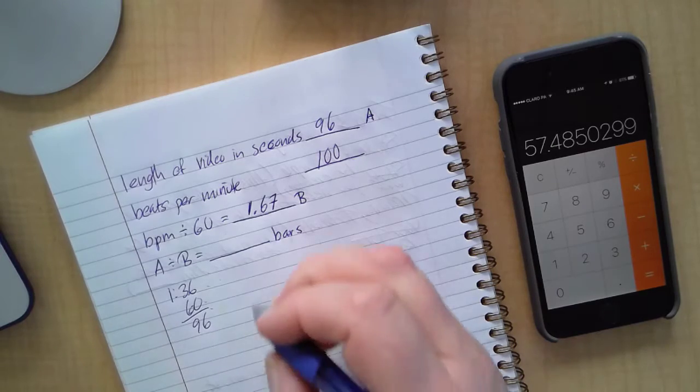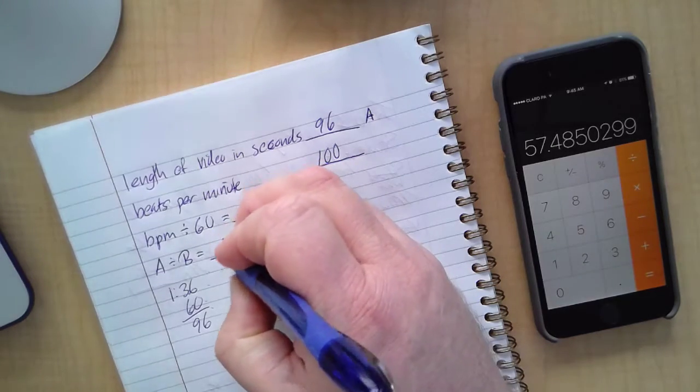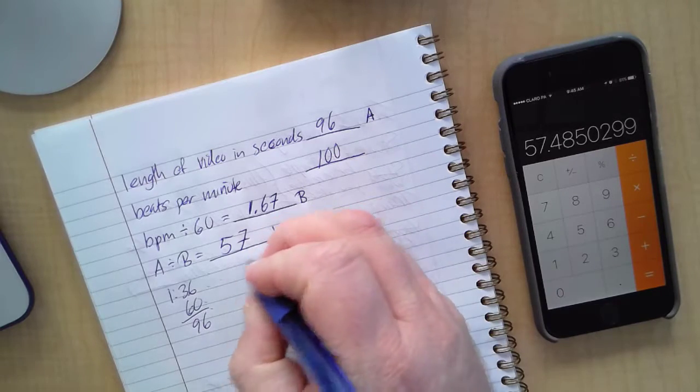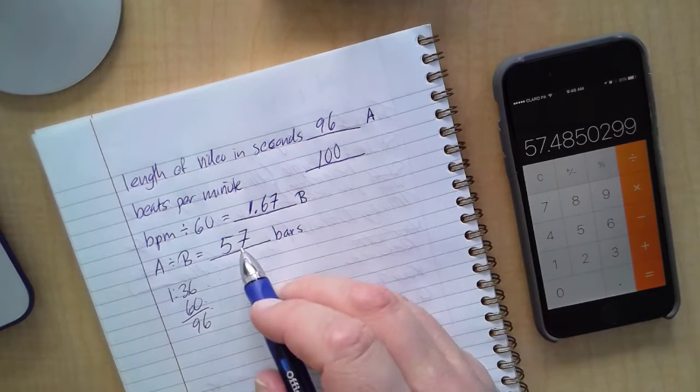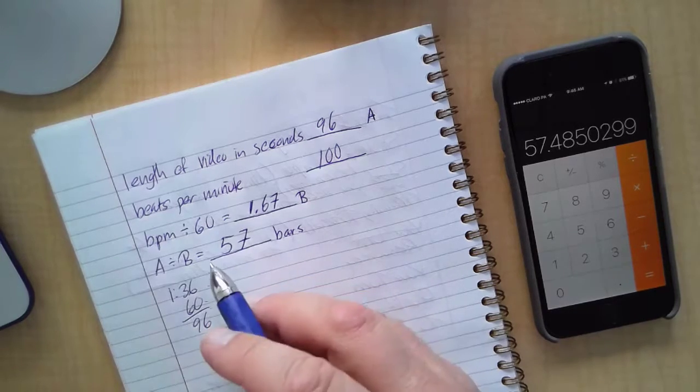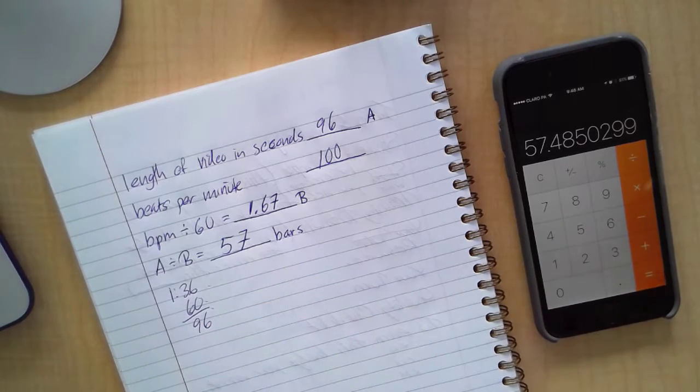Equals 57.4. Let's just round it down and we're just gonna say 57 bars. That's a really important number. When we get into GarageBand, we're gonna tell GarageBand we want a song that's 57 bars long. Okay, in the next video we're gonna start up GarageBand.